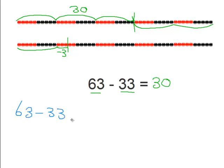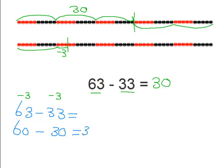Now let's try this in another way again. So again, sixty-three minus thirty-three. So let's round — or round it down — since it's closer to thirty and sixty. So we have sixty minus thirty, which also equals thirty.